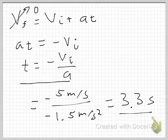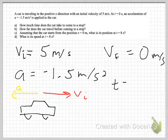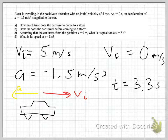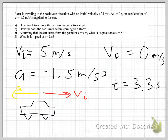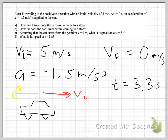I can now add that quantity — 3.3 seconds — to my list of knowns. For Part B, how far does the car travel before coming to a stop? I'm looking at the same part of the motion, so my final velocity is still 0 meters per second. However, now I also know the time: 3.3 seconds. What I need is something that relates all of these known quantities to the distance traveled — that's the unknown I want.